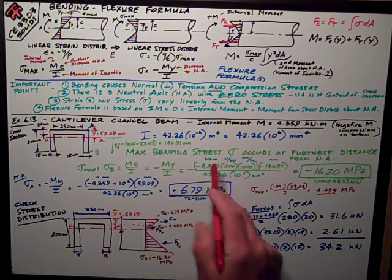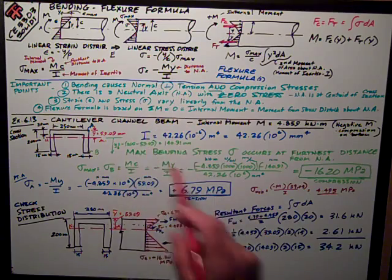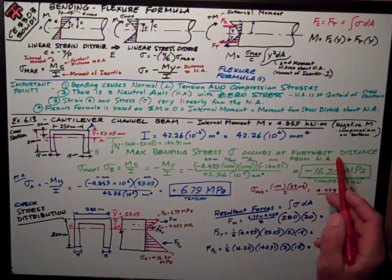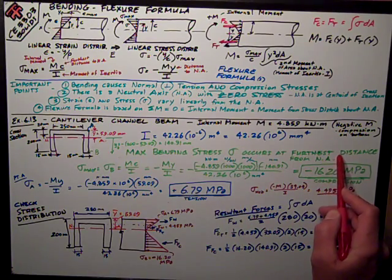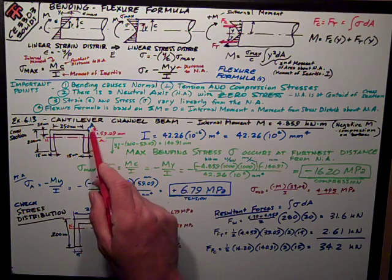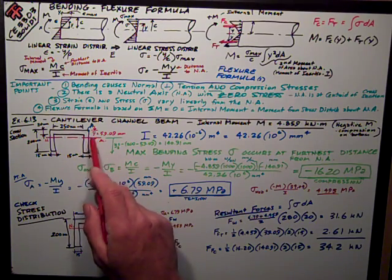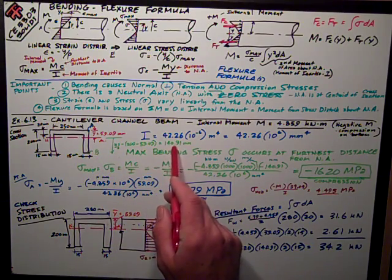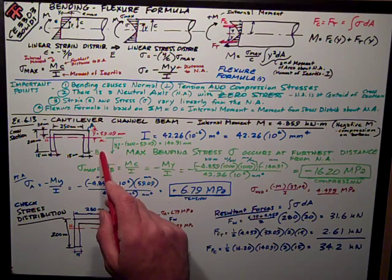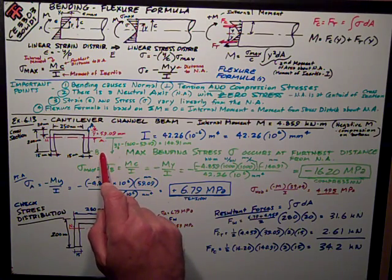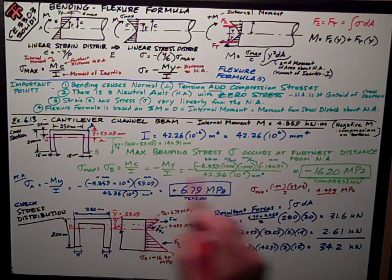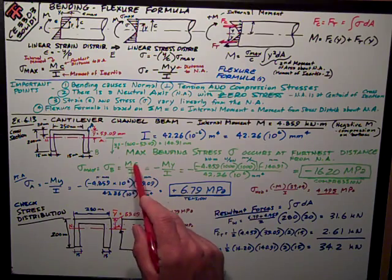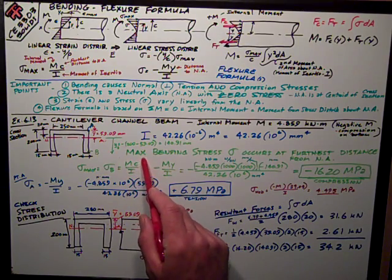The maximum bending stress from these formulas occurs at the furthest distance which we've defined as C from the neutral axis. So, I've only got 59 and a little bit millimeters to the top from the neutral axis, but I've got 140, almost 141 millimeters down from the neutral axis to the bottom. So, my maximum stress is going to occur there, and I've called that point B.